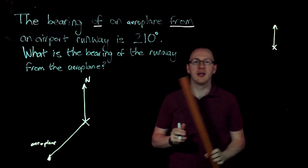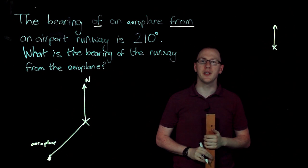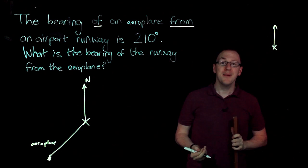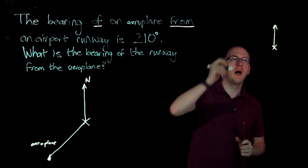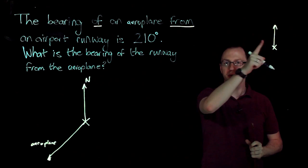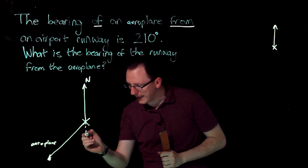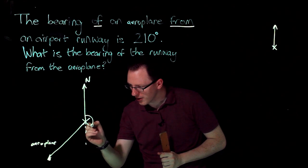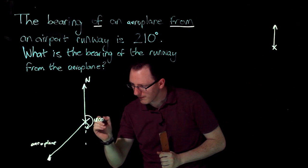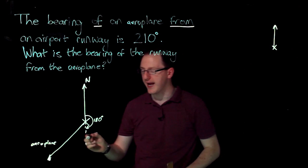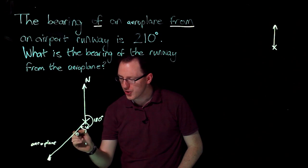And we get our protractor and we want to measure 210 degrees. If you have a semi-circular protractor, it's going to be a problem because you're not going to be able to get to 210. So we need to use the fact that south is 180, and to get to 210, we need to add on 30 degrees.